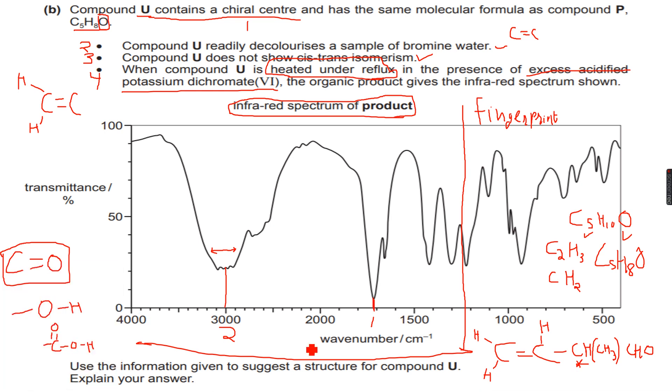We have fulfilled the condition of an alkene because we have the alkene group. This does not show cis trans isomerism because one of the double bonded carbons has two identical groups attached to it. So it does not show cis trans isomerism and when you will heat this in the presence of, when you heat this under reflux in the presence of acidified potassium dichromate, this will oxidize to form a carboxylic acid. So we have fulfilled all the conditions now. So we can, with confidence, we can say that this is compound U and this is exactly how we deduce in infrared spectra. Let's move forward to the next question now.